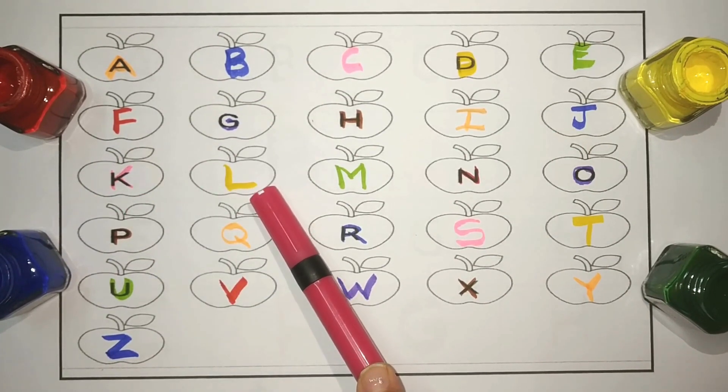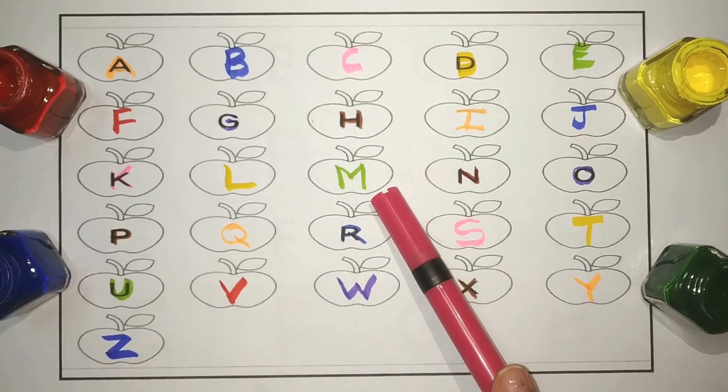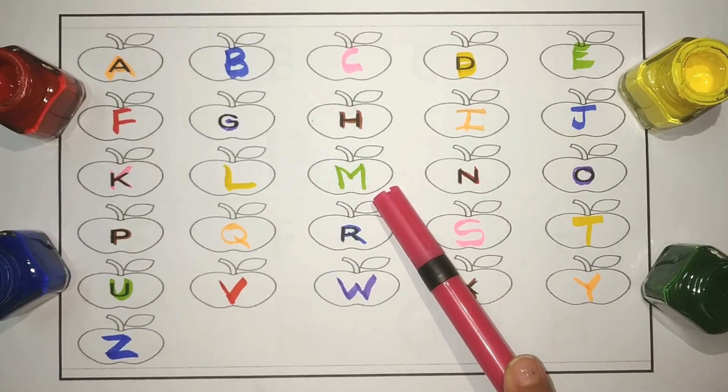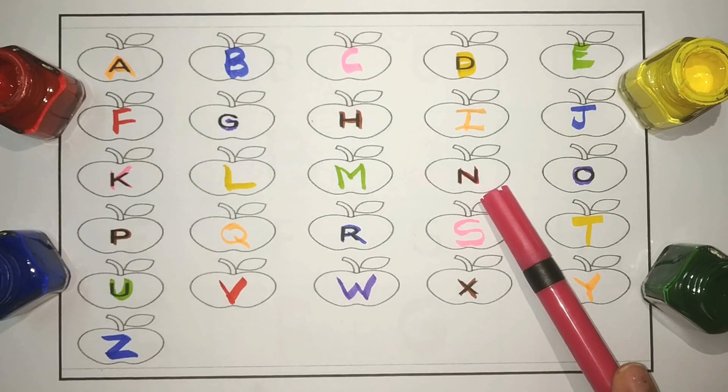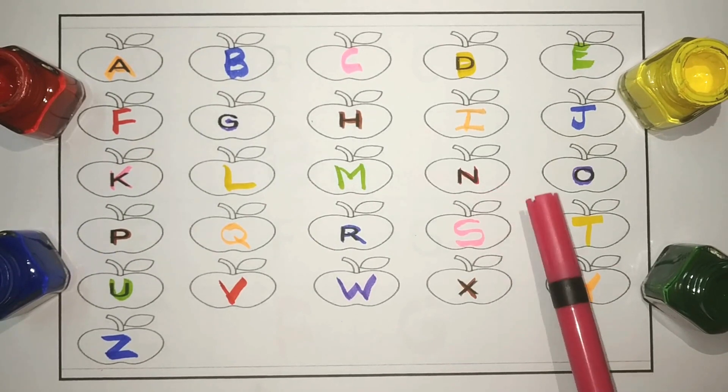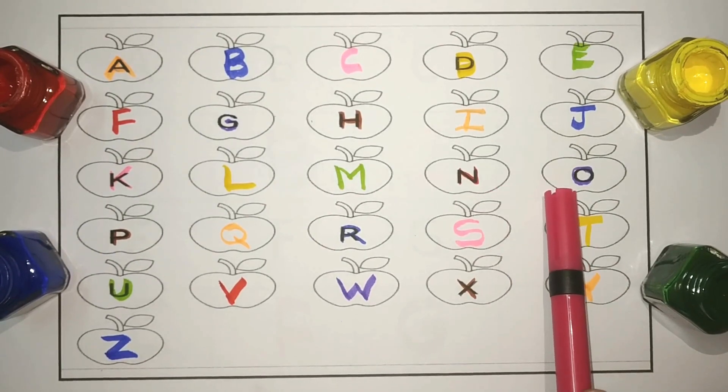L. L for lion. M. M for monkey. N. N for nest. O. O for orange.